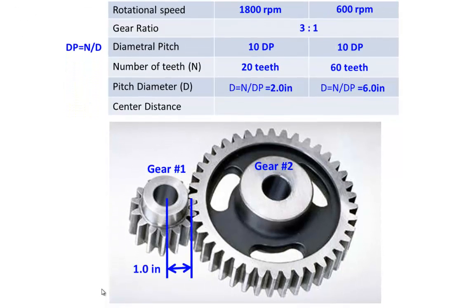If we take the radius of the smaller gear — one half the diameter, or 1 inch — and add it to the radius of the larger gear — one half the diameter, or 3 inches — we will discover that we need to mount these two gears 4 inches apart in order to get them to mesh in an efficient manner.